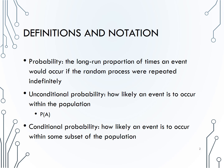Conditional probability is how likely an event is to occur within some subset of the population. In other words, we are restricting the random process to already know some event has occurred. We would denote it with this notation and read it as probability of B given A. The vertical line we could also read as conditioned on — meaning we know event A has already occurred. Now we want to know how likely B is to occur, having restricted the population to only those where A has already happened.